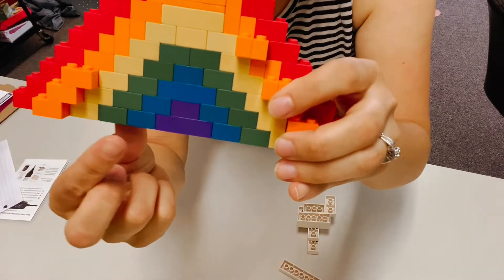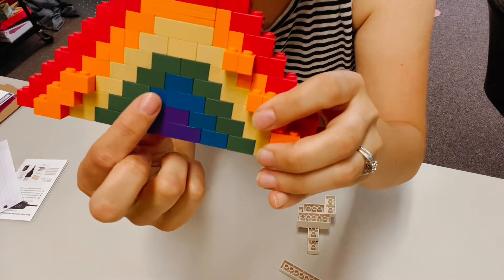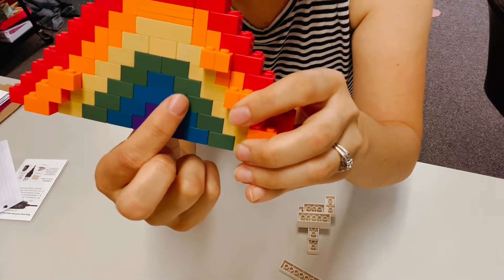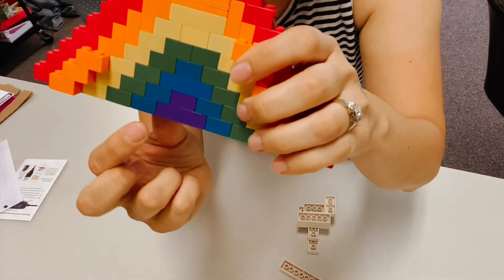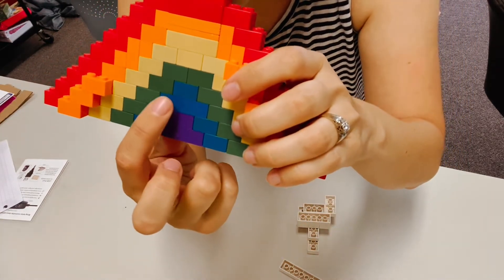Then you're going to do the blue on top of that. If you can see the blue, you're going to start with the purple and work yourself out. So then it's got one, two - you could do two pieces here or one - three, four, five, six pieces. Five or six pieces for the blue.